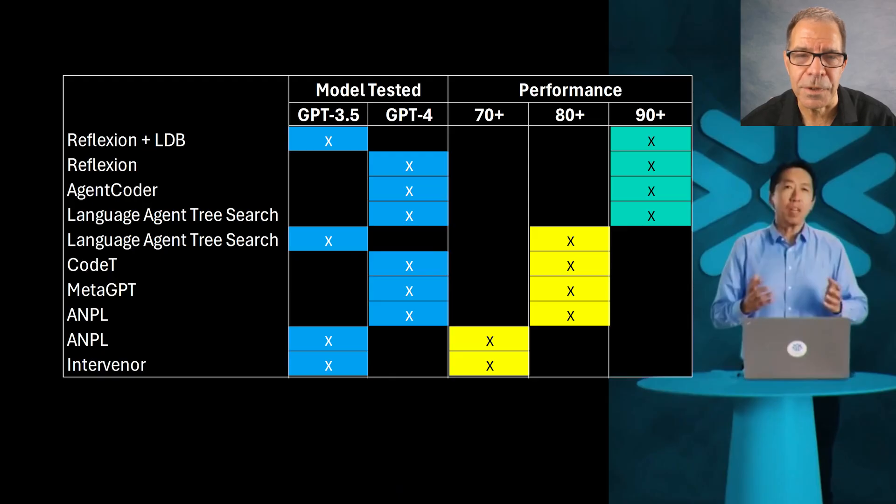Now, for convenience, here's a summary of everything Andrew Ng presented last week at Snowflake. Here, you can see that Reflection was the only model that scored a 90-plus on GPT 3.5. But in fairness, Agent Coder apparently wasn't tested on that model, or if it was, the results weren't reported by Andrew at Snowflake. The other framework that achieved a 90-plus score was Language Agent Tree Search, which it achieved on GPT-4, but not on GPT-3.5.